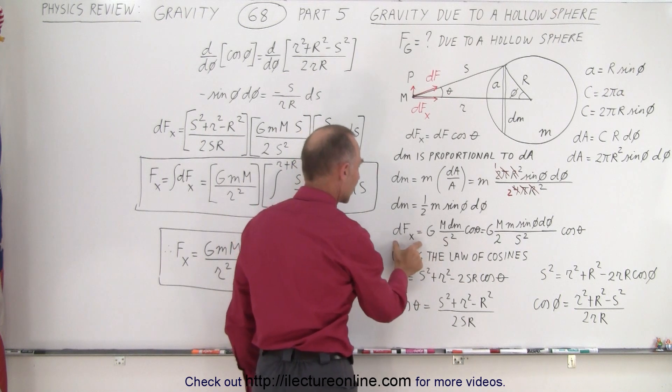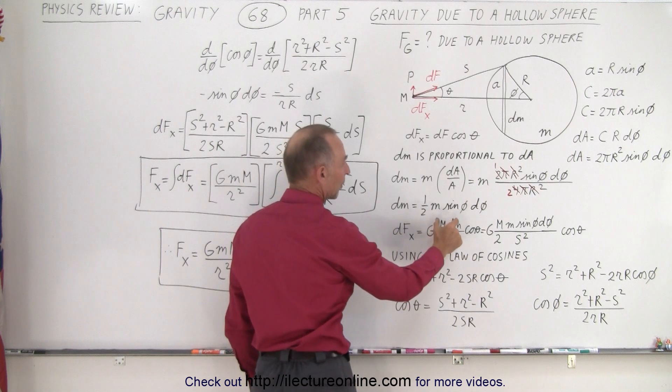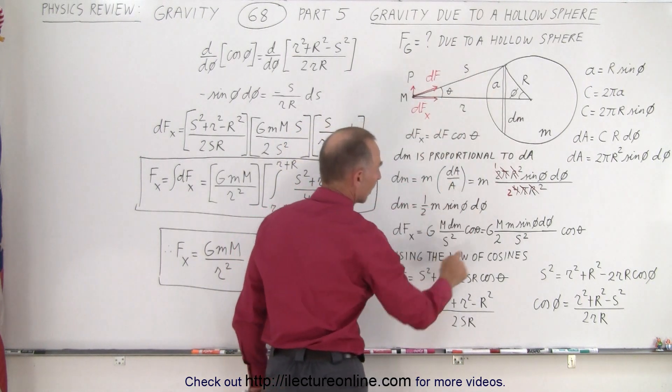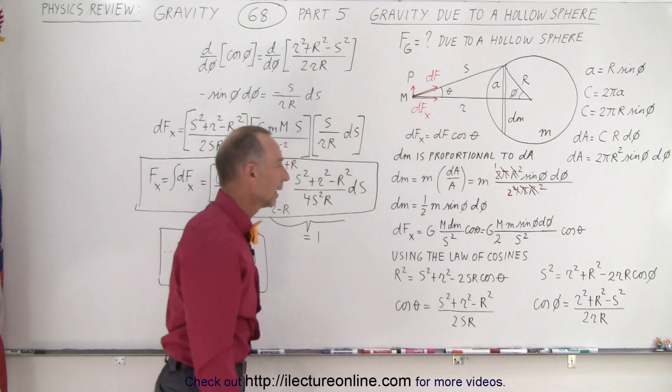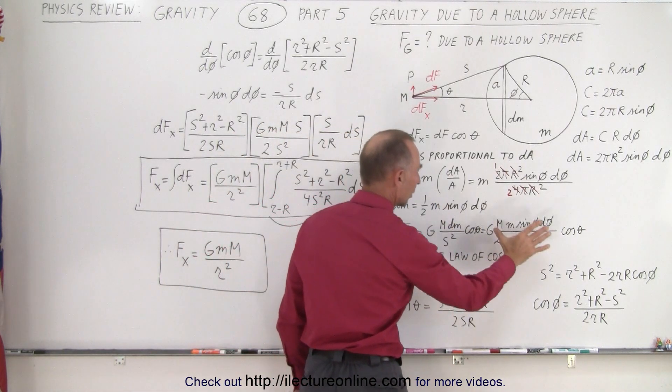And so that's what we have over here. dF_x is then going to be the typical equation, G times the product of the masses divided by the distance squared, which of course is going to be s squared, times the cosine of the angle. And then if we plug in what dm is equal to, which we have right here, we end up with this equation.